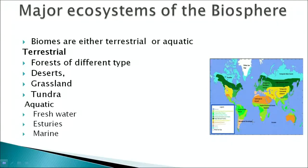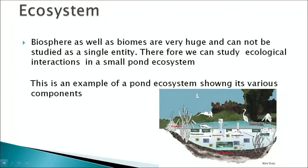The major ecosystems of the biosphere are of two types: terrestrial and aquatic. The terrestrial ecosystems are forests of different types like temperate, tropical and boreal forests, deserts, grasslands, and tundra. Aquatic biomes include freshwater, estuaries and marine. Since the biosphere and biomes are huge and cannot be studied as a single entity, we can study ecological interactions in a small pond ecosystem.